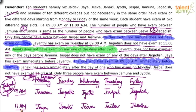The final arrangement from Monday to Friday, across 9am and 11am slots, is: Jamuna, Jaya, Jayanti, Janki, Jyoti, Jeeva, Jaspal, Jai Dev, Jagdish, and Jasmine — in that order.